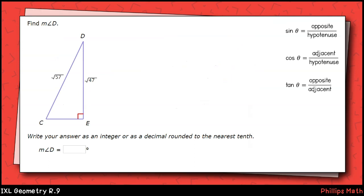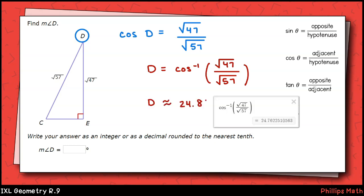Last one. We're looking for angle d this time, and we're given the side adjacent to that angle and the hypotenuse of the triangle. We can relate these three pieces using the cosine function. We'll have cosine of angle d equals the square root of 47 over the square root of 57. To solve for d, we'll have d equals the inverse cosine of the square root of 47 over the square root of 57. To approximate this, make sure you type the entire expression with the square roots in your calculator. We'll get about 24.8 degrees.